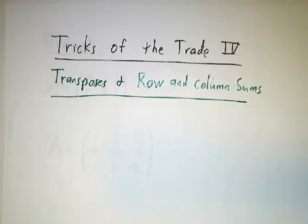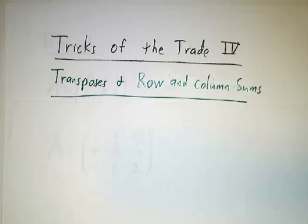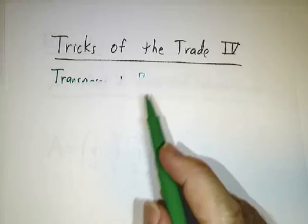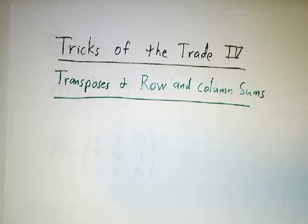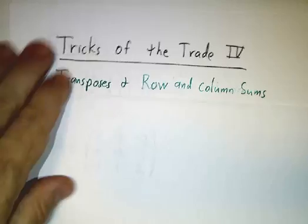This is the last in our series of videos on tricks of the trade — ways to diagonalize matrices. In this video, we're going to look at how to use transposes, row sums, and column sums to find eigenvalues.